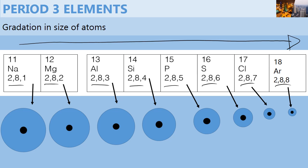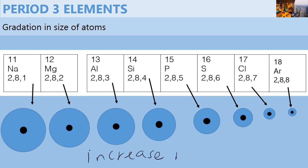As you move from sodium to magnesium, aluminum and finally argon, there is an increase in the number of protons, which in effect leads to an increase in the nuclear charge.